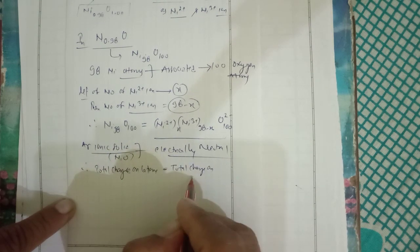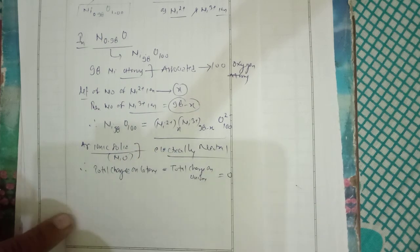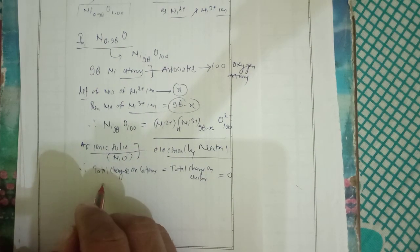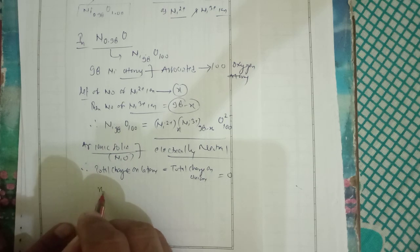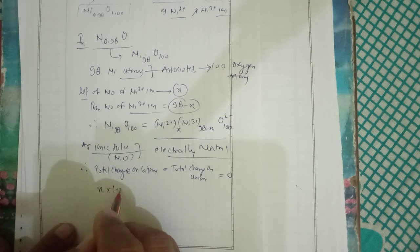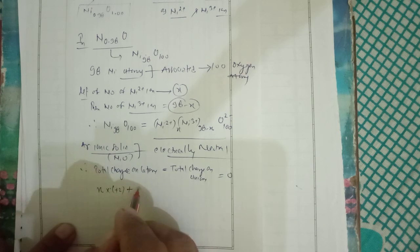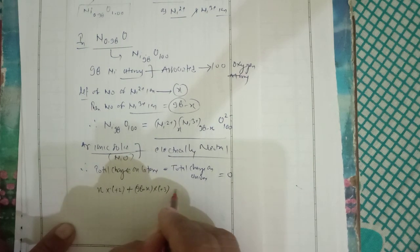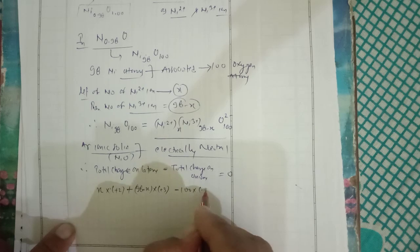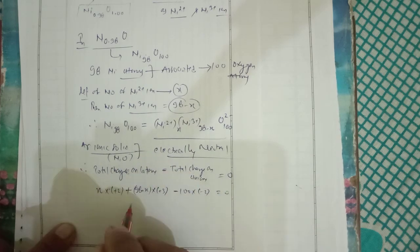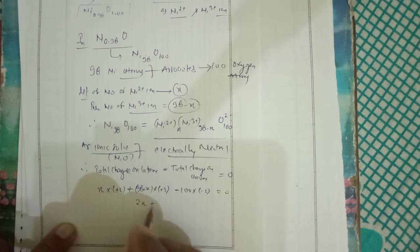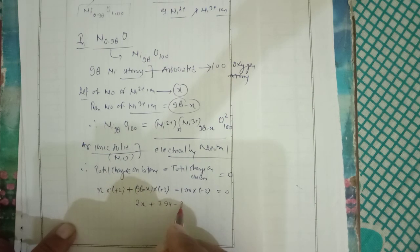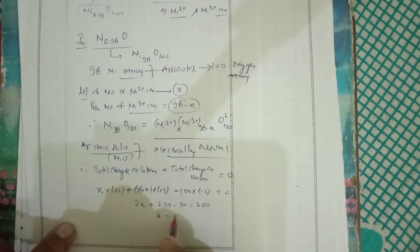So x multiplied with plus 2, plus 98 minus x multiplied with plus 3, minus 100 multiplied with minus 2 equals zero. So it will be 2x plus 294 minus 3x equals 200. We solve this part, so x equals 94.